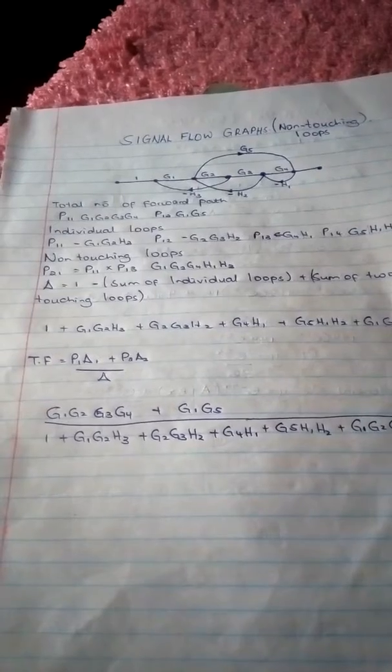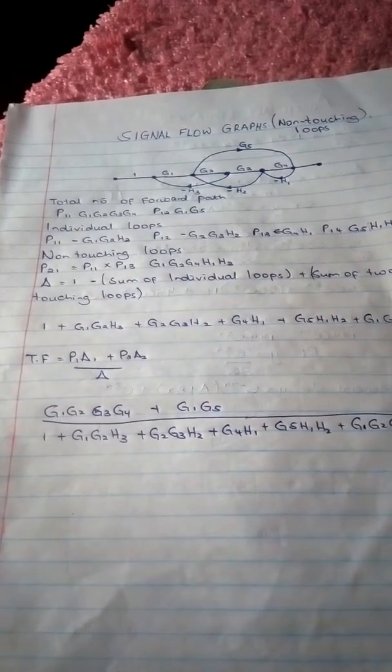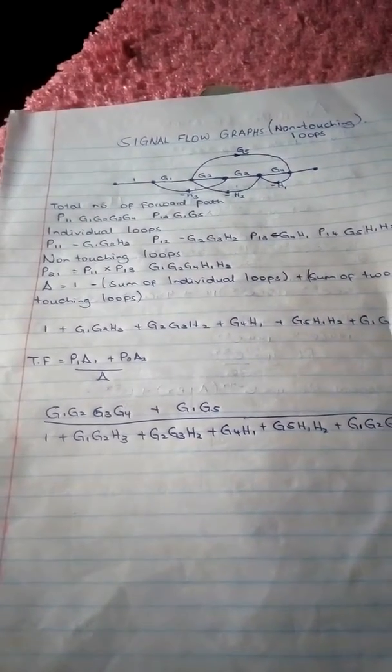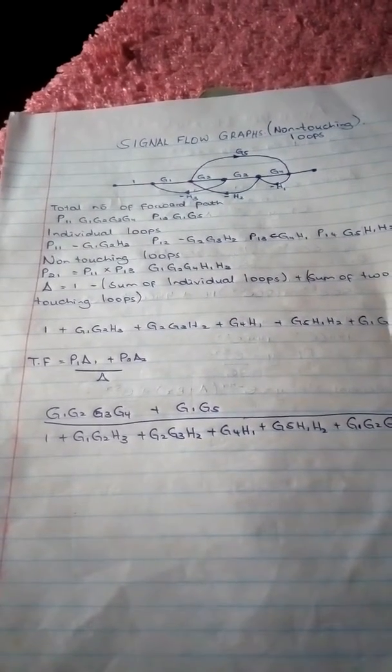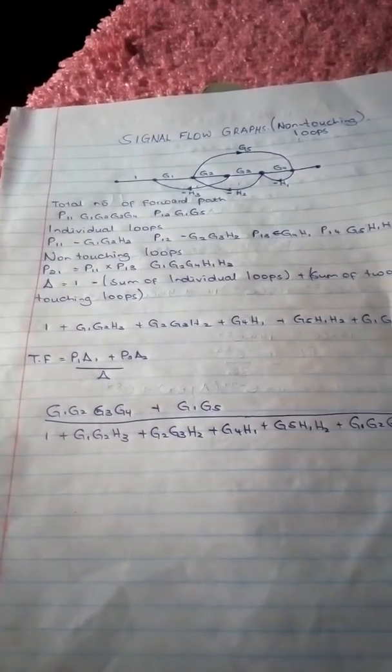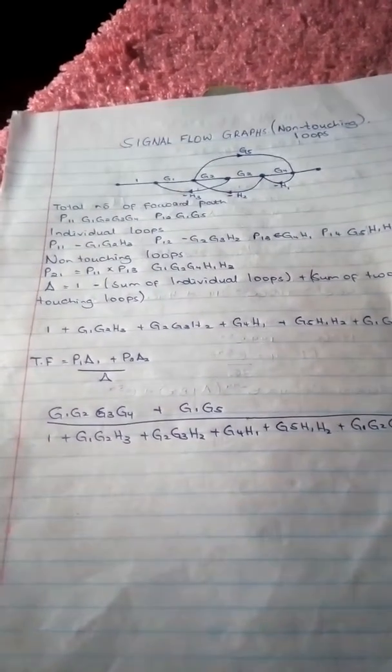Then you get the transfer function of individual loops. For example, we see that we have four individual loops. The non-touching loops are loops that do not touch the forward path, for example P11.